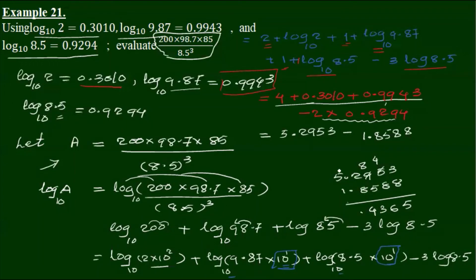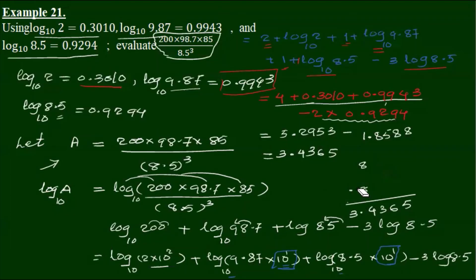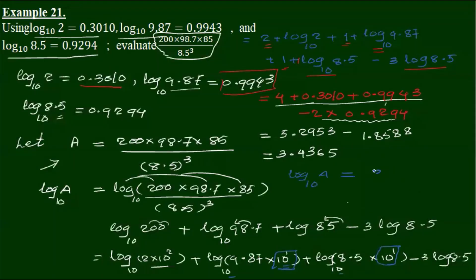So this gives 4, and 4 is 1 out of 3. Let's work through: 3, 5, 4, 3, 6, 5. Now we can write log A base 10 equal to 3.4365.